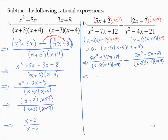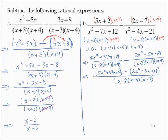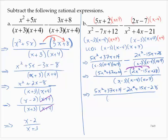We write that as the single fraction: 5x squared plus 37x plus 14, subtract 2x squared minus 15x plus 28, over the common denominator x minus 3 times x minus 4 times x plus 7. Rewriting the numerator and remembering to distribute the subtraction through the entire second quantity gives 5x squared plus 37x plus 14 minus 2x squared plus 15x minus 28.